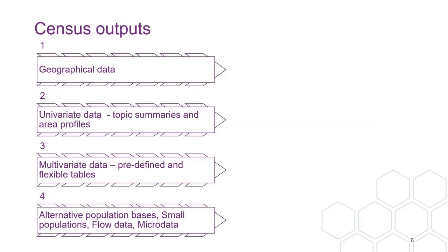In terms of census outputs, I've grouped them into four chunks. There's the geographical data — the boundaries we need to create maps. There's a set of univariate data summarized in topic summaries and area profiles, which are currently being released. There's also multivariate data; the first of those due out next week will cover sexuality and gender identity with sex and age, five-year age breakdowns, the same for race, and the week after, religion. The other new thing we're being promised is flexible tables, so we'll be able to cross-tabulate what we want, subject to statistical disclosure control.